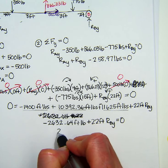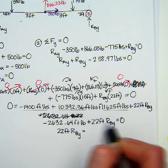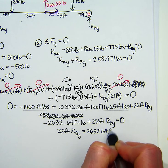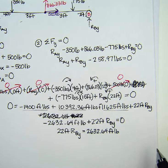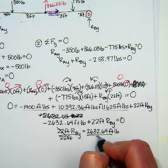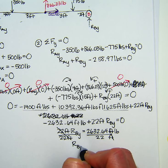So 22 feet RBY. Add this over to the other side. Divide by 22 feet. And yay! We have an answer for RBY.